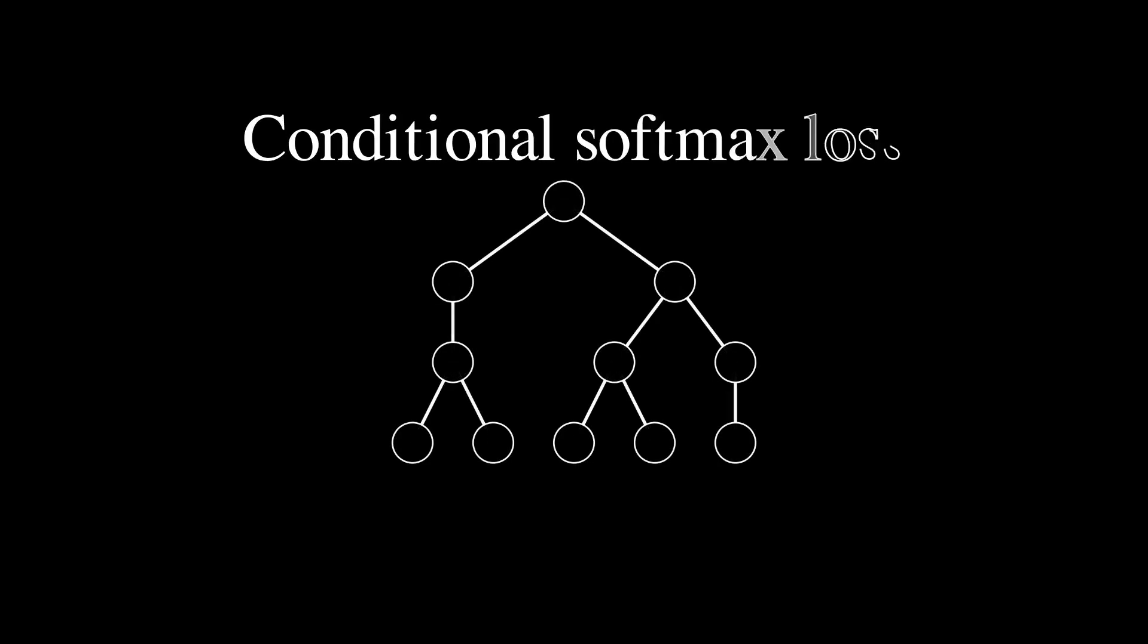Another possible approach is computing the softmax from the top to the bottom. This is called conditional softmax loss. To compute conditional softmax hierarchical loss for the same graph, the network output layer needs to have the same length as there are nodes in the tree.